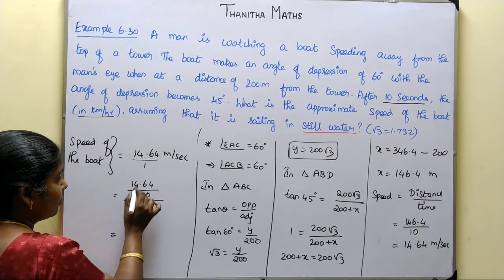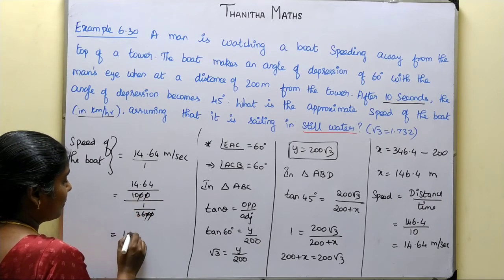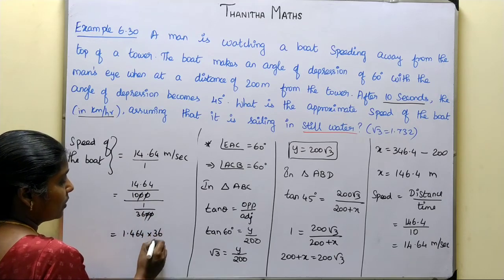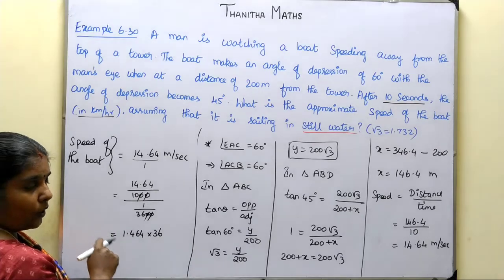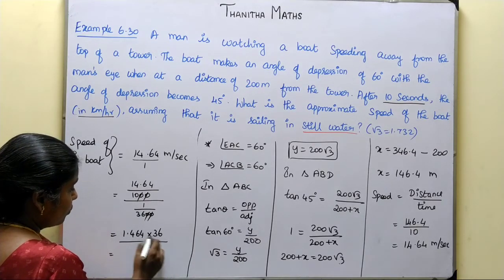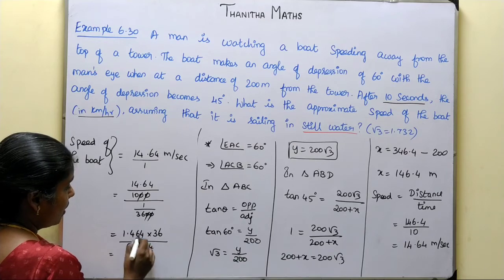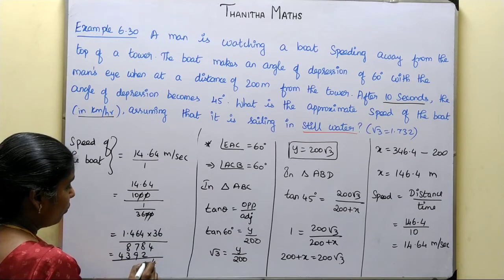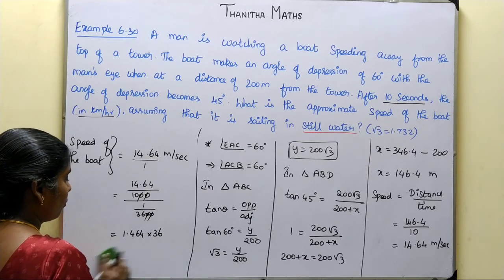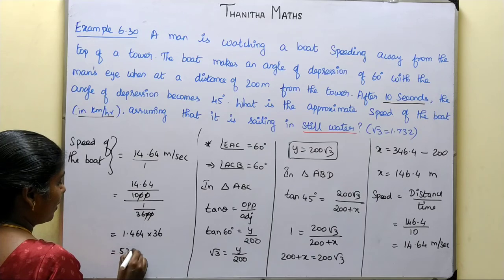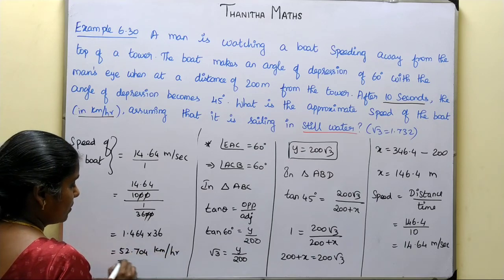After the unit conversion, multiplying 14.64 by 3.6 gives us 52.704. So the speed of the boat equals approximately 52.704 kilometers per hour. This is our required answer.